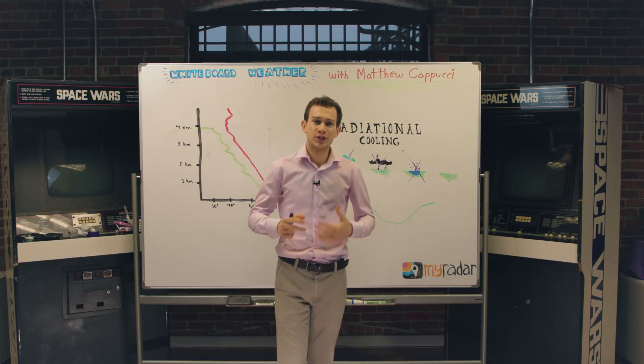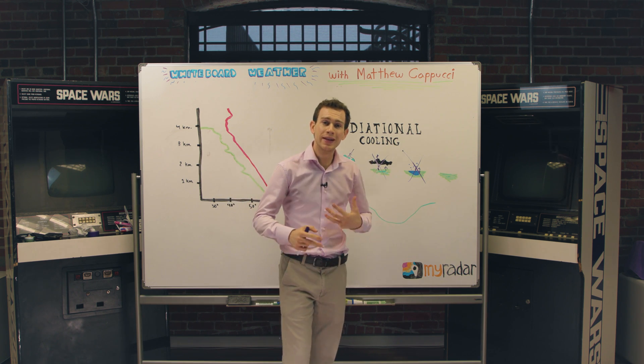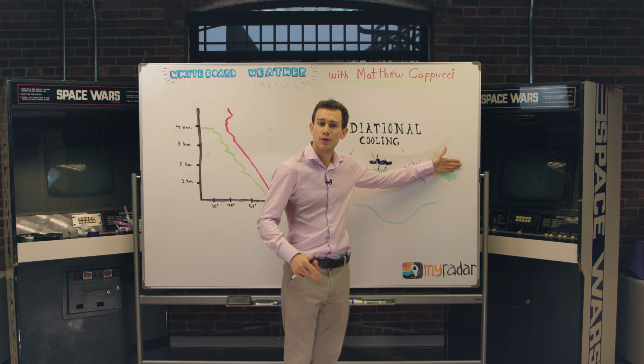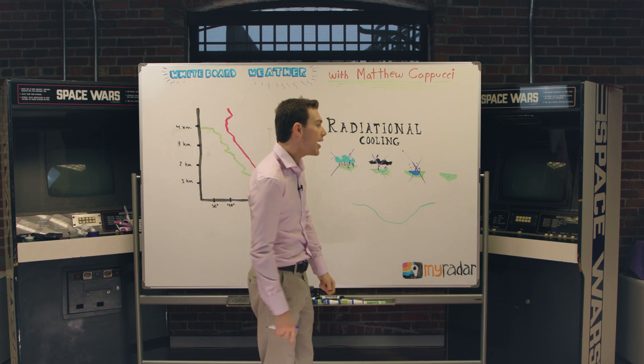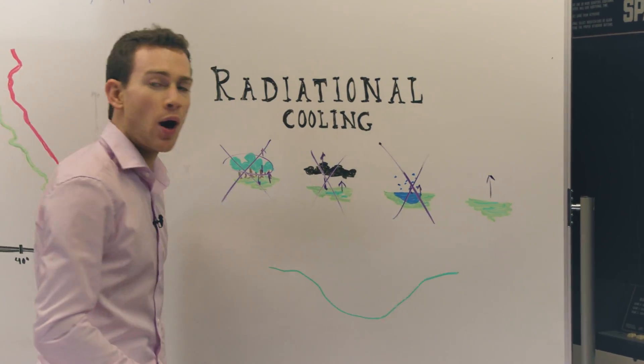The best environments for radiational cooling are where the air is dry enough that temperatures can fall quickly after sunset, you have no cloud cover, and no bodies of water nearby. As a result, those temperatures can radiate outwards and suddenly temperature falls like a rock.